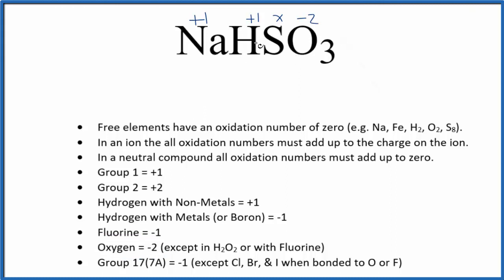So we could just set up an equation. We have one plus one plus x minus two times three. All of that equals zero, since this compound is neutral. So we have one, two plus negative six. So that's four. X minus four, that equals zero. X is going to equal a positive four.